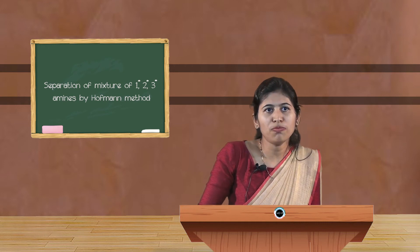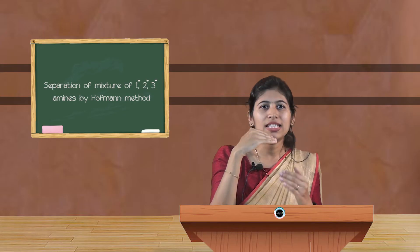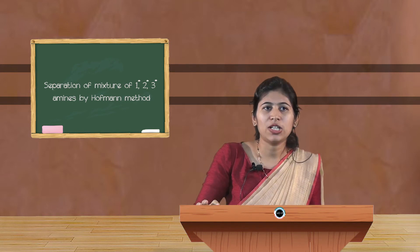The secondary amine, which has the general formula R₂NH, reacts with the Hofmann reagent. Since there is only one hydrogen, it reacts with only one ester group. As a result, we get dialkyl oxamic ester as the product, having the general formula CO·NR₂ and CO₂C₂H₅. This dialkyl oxamic ester is in the form of a liquid, while the primary amine product is in the form of a solid.